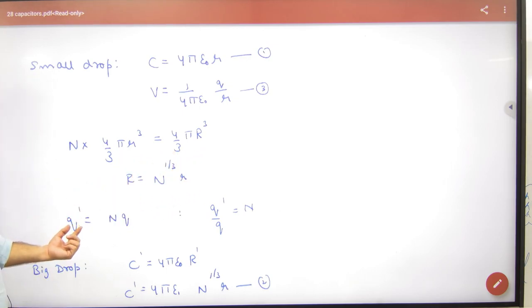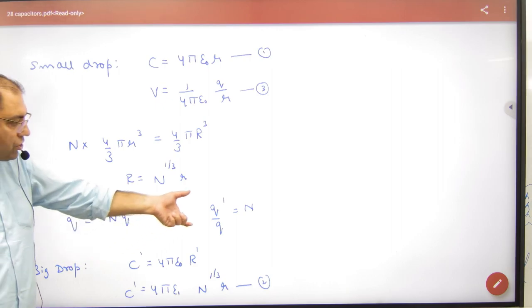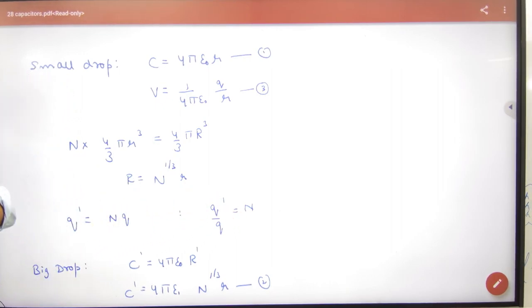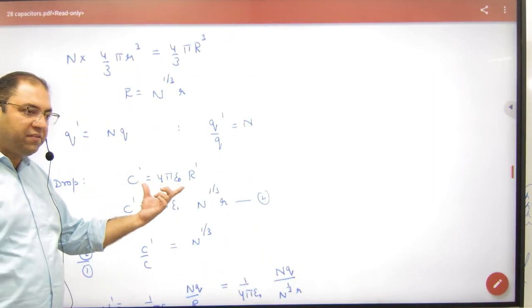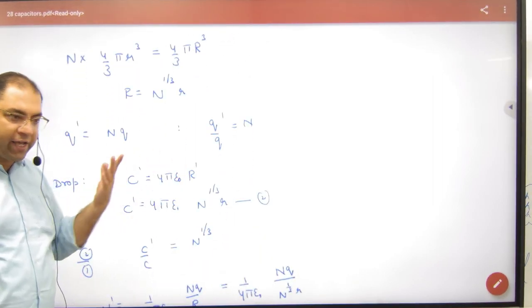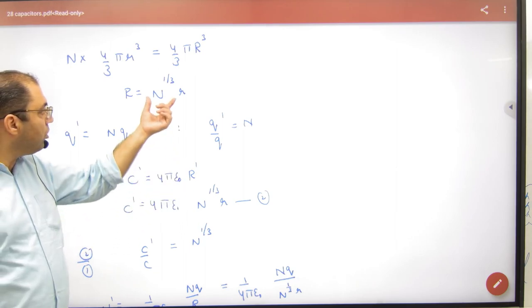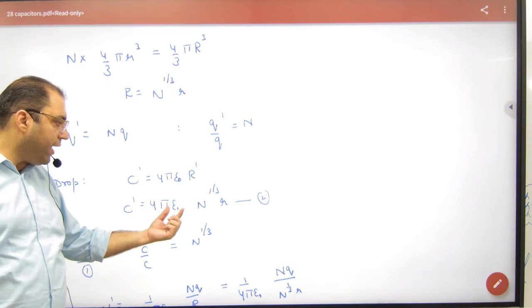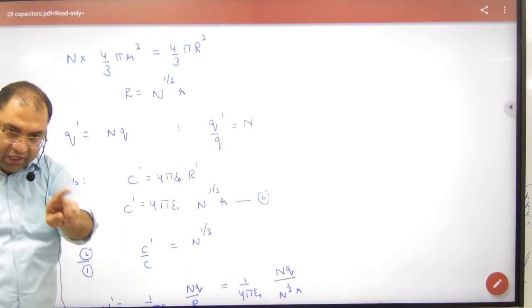Charge n into q, so charge ratio big drop n. n is one answer. Second, big drop capacity 4πε₀R, and small r relation you know, 4πε₀ small r.